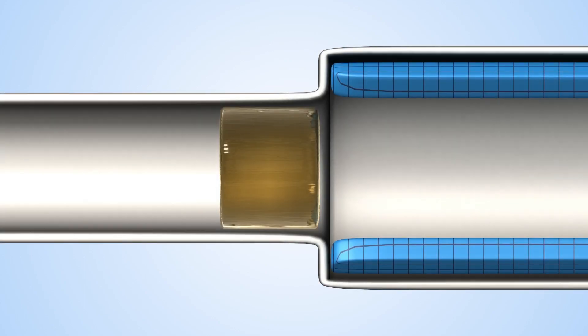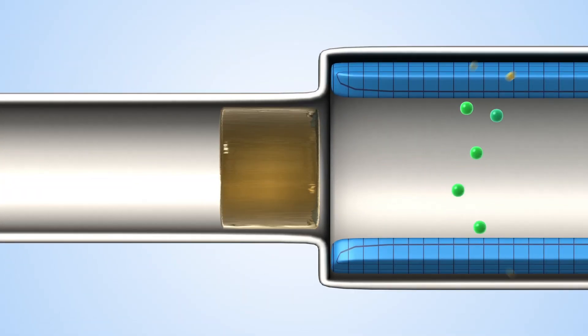First, bunches of protons are accelerated into dense metal targets, creating streams of exotic particles named pions, which quickly decay into muons. The muons spread out rapidly, moving forward and side to side like the pedestrians on the bridge.